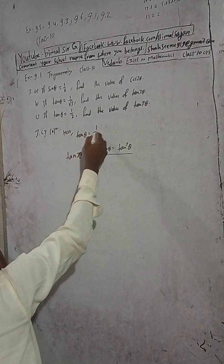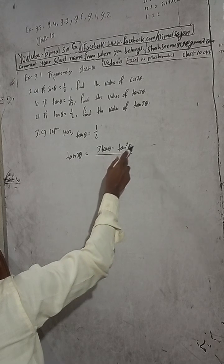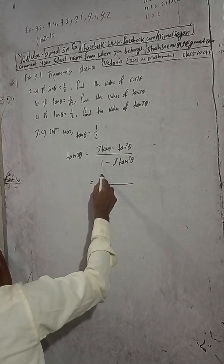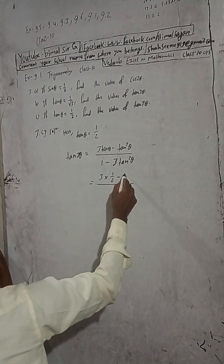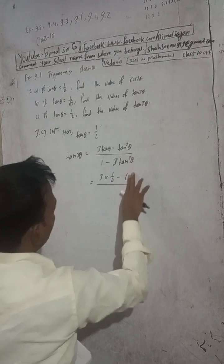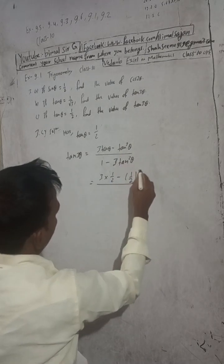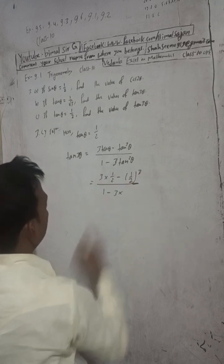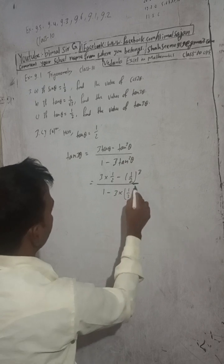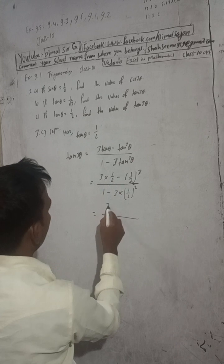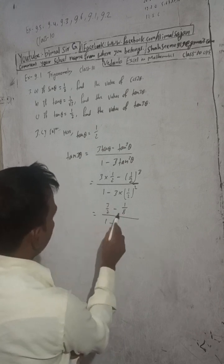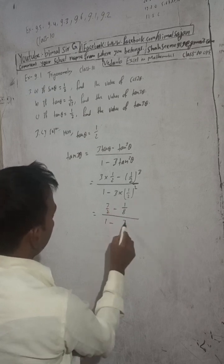If tan zeta is equal to 1 by 2, develop tan 3 zeta using the formula: tan 3 zeta equals 3 tan zeta minus tan cubed zeta divided by 1 minus 3 tan squared zeta. Now just put here: 3 times 1 by 2 minus 1 by 2 cubed, divided by 1 minus 3 times 1 by 2 squared. That gives 3 by 2 minus 1 over 8, divided by 1 minus 3 by 4.